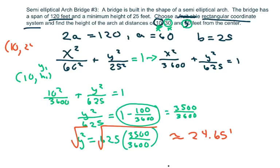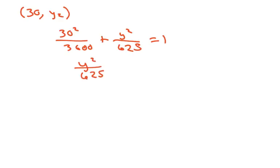The next one is at $x = 30$, so we're going to do the same thing. We plug in 30: $\frac{30^2}{3600} + \frac{y^2}{625} = 1$. Let's solve for $y$. Moving everything over, we get $\frac{y^2}{625} = 1 - \frac{900}{3600}$.